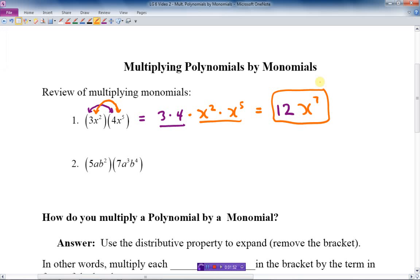Let's do one more question for review. We do the coefficients first. 5 times 7 is 35. Then I'll do the a's: a times a cubed. That's one a and three more a, so a to the fourth. Add the exponents. Now the b's: b squared times b to the sixth is b to the eighth.